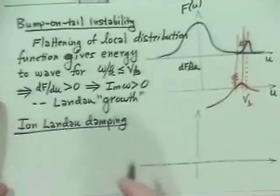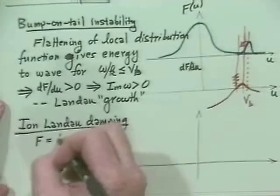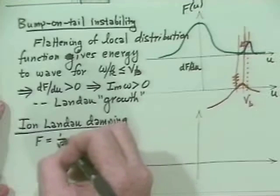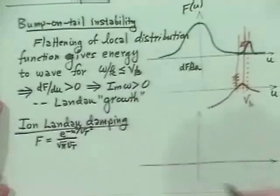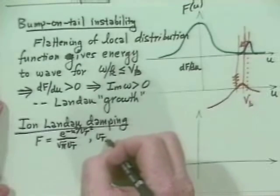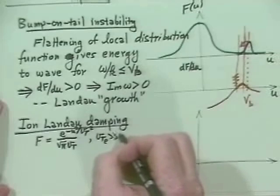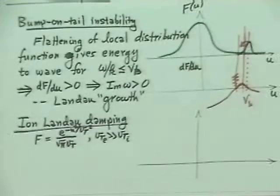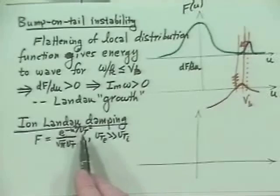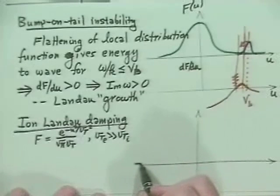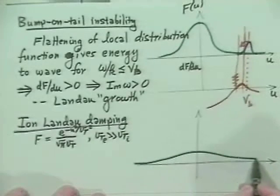We ought to recall that our F equals 1 over root pi times V_thermal times e to the minus u squared over V_thermal squared. But the electron thermal velocity is the square root of the mass ratio larger than the ion thermal velocity, assuming roughly the same temperature. So what that means is that the electron distribution function is much smaller in amplitude but extends over much larger velocities.